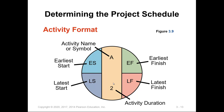Each activity will be presented by a circle or a rectangle — the shape doesn't matter. But it needs to include the name of the activity, the duration, the start, and the finish: earliest start, earliest finish, latest start, and latest finish. All this information has to be included within the network diagram activities.